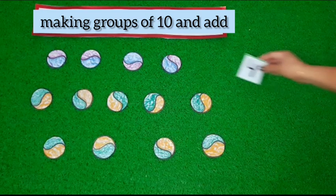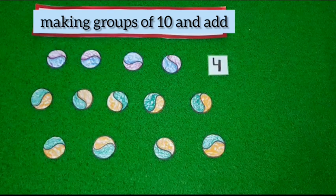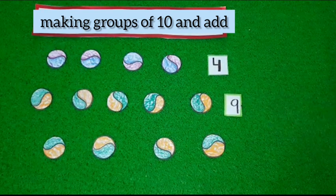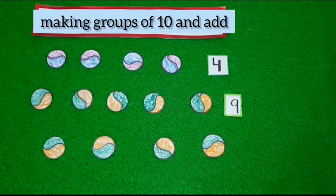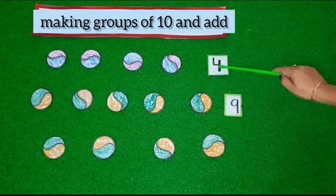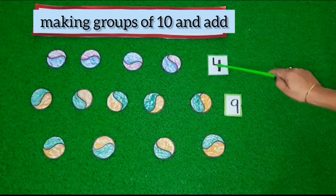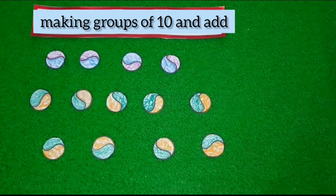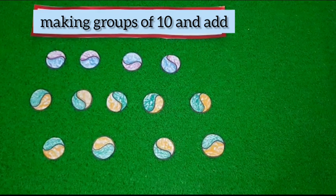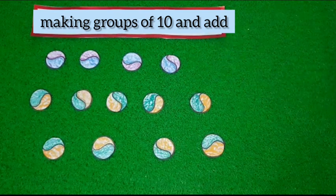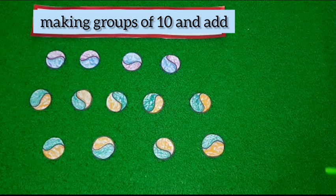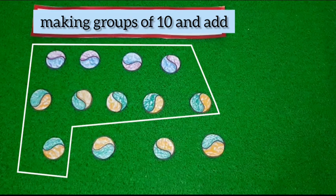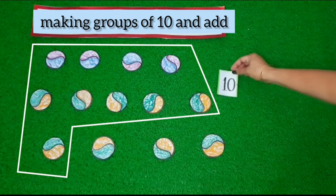Here we have some blue and some green balls. The number of blue balls is four and the number of green balls is nine. Let's make a group of ten balls. With these four blue balls, how many more balls will I take? Four blue balls and six green balls will make a group of ten. Yes, four blue and six green make a group of ten.